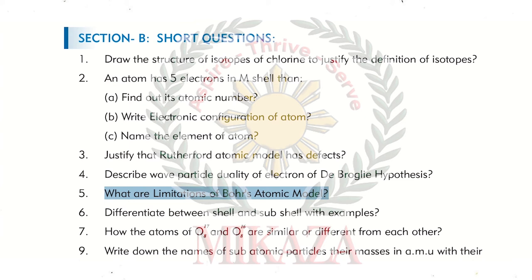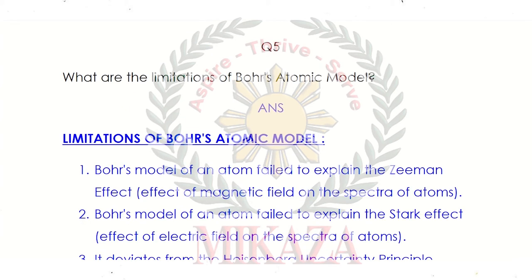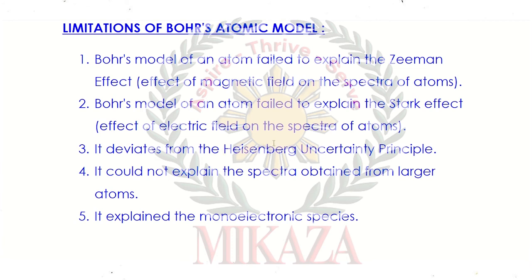Question No. 5: What are the limitations of Bohr's atomic model? Number one: Bohr's atomic model failed to explain the Zeeman effect — when a magnetic field is applied to atoms, the spectrum splits, and Bohr's model could not explain why. Number two: it failed to explain the Stark effect — when an electric field is applied, the spectrum changes, and Bohr's model could not account for that either. Number three: it deviates from the Heisenberg uncertainty principle.